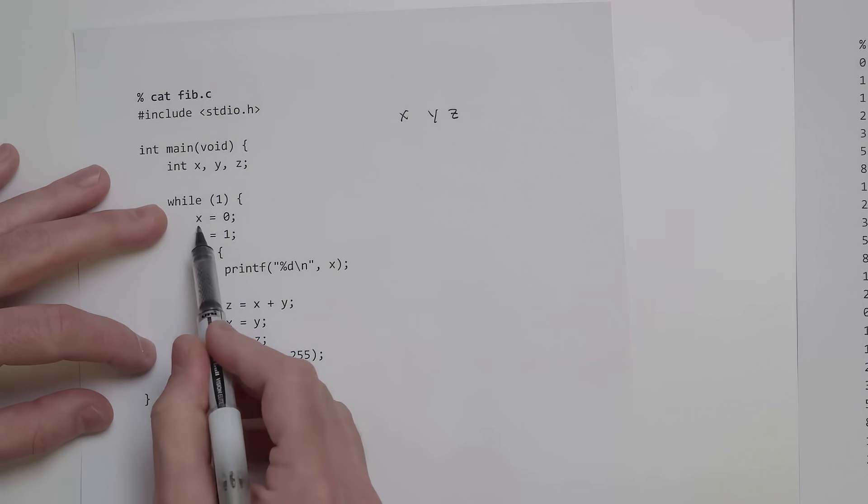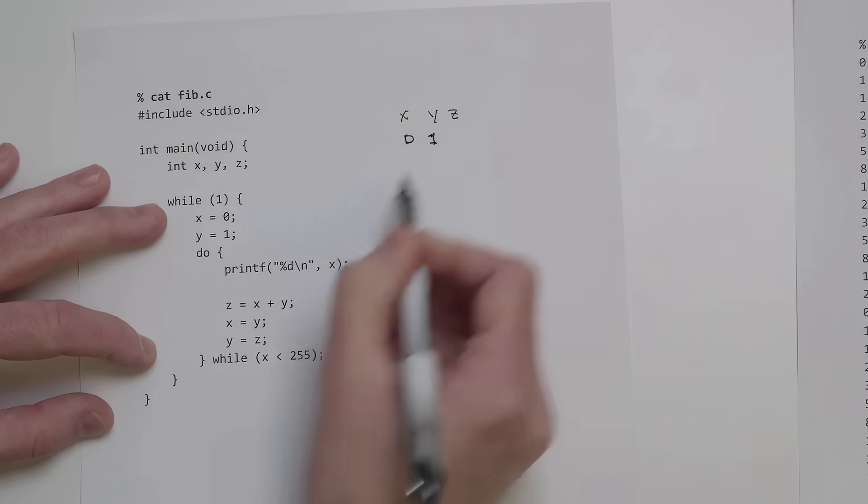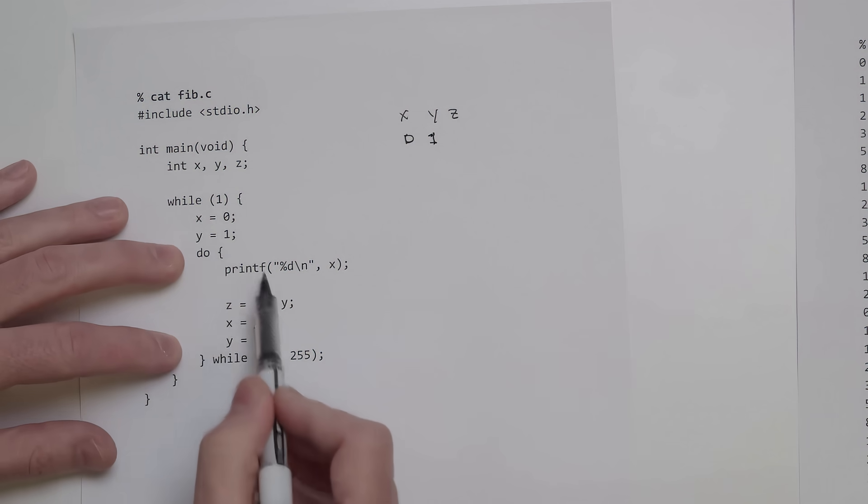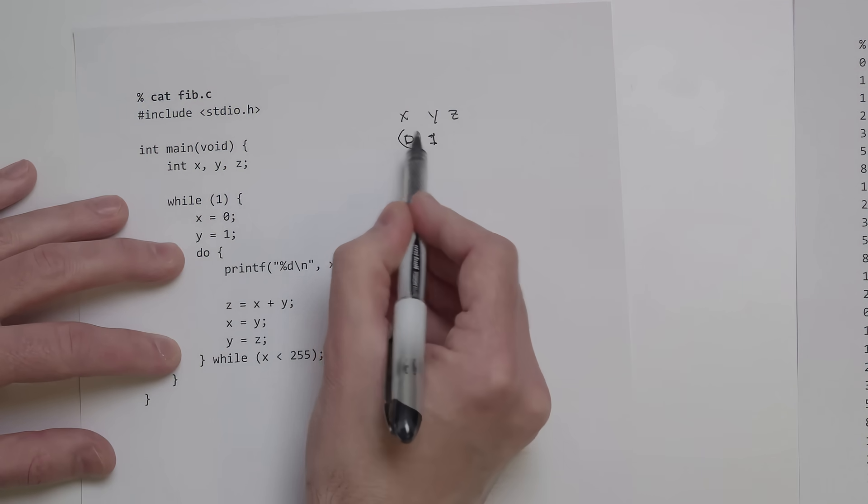Inside that, we set x to 0 and y to 1. So x starts out as 0, y starts out as 1, and then we have this loop where we print out the value of x.